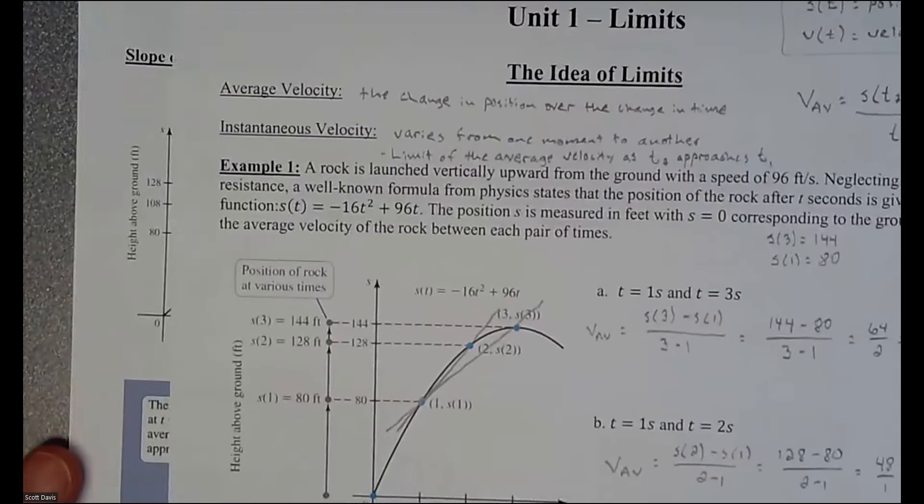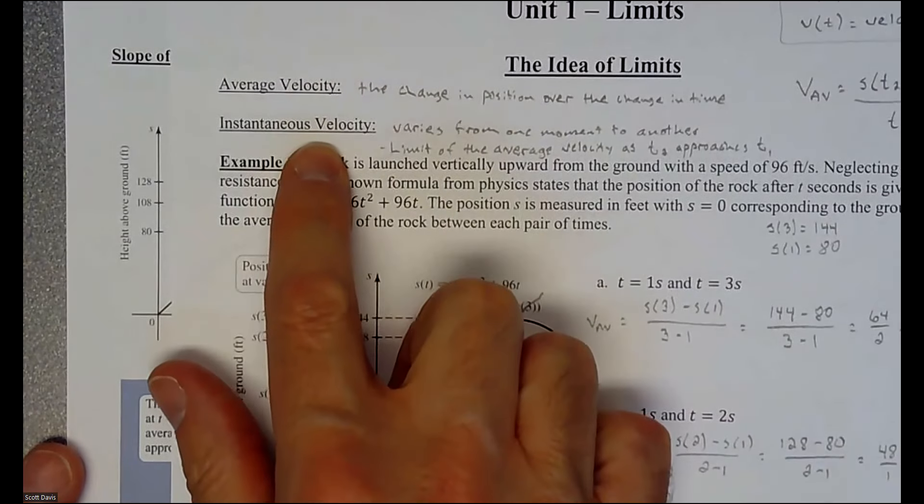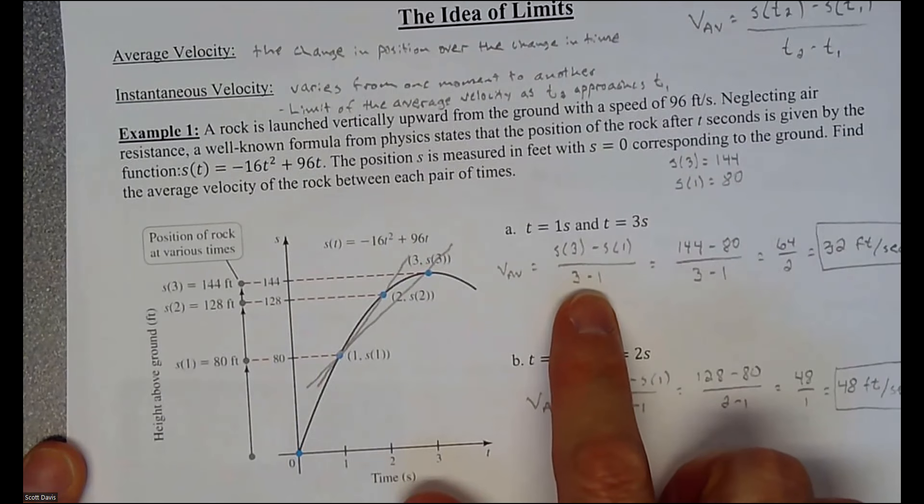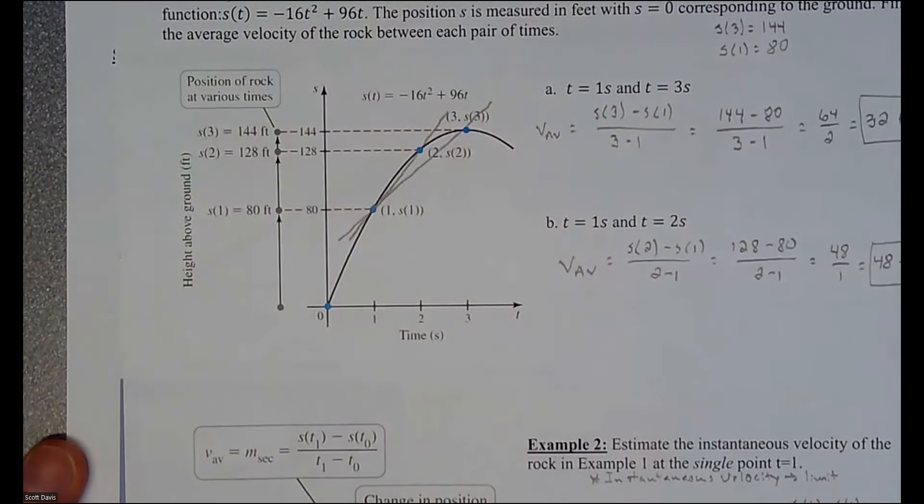So we just did an example, or we introduced the idea of an average velocity and instantaneous velocity. The average velocity is just an old-fashioned find the slope between two points, and then instantaneous is we're going to be trying to find the slope as you are squeezing the distance between these two values.